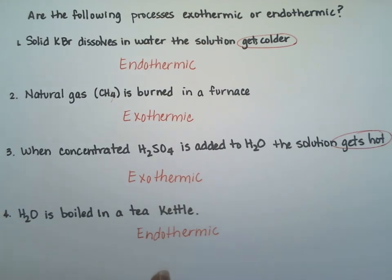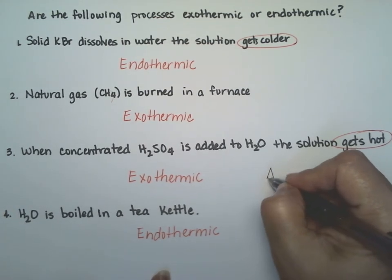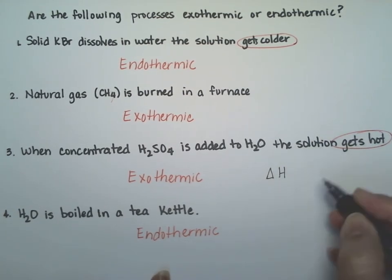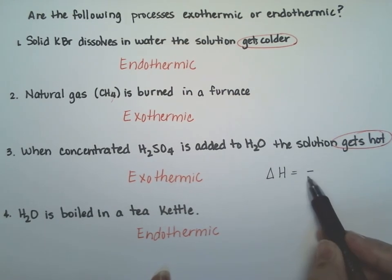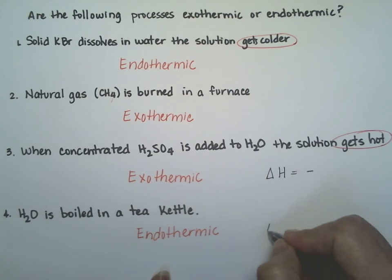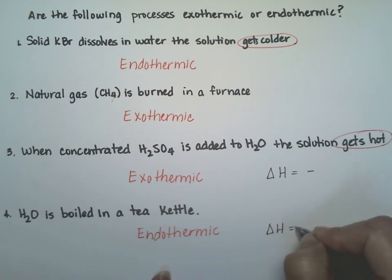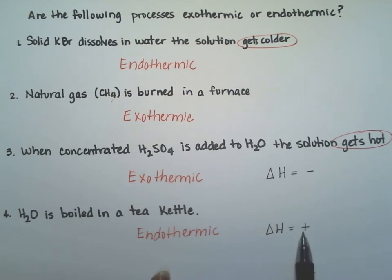Just as a reminder, whenever you're looking at the enthalpy, a negative sign means that the reaction is exothermic. A positive sign means that the reaction is endothermic. So the sign that you see on your enthalpy is only about the direction in which the heat is flowing.